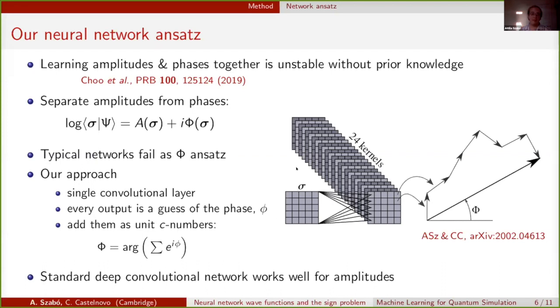What we do instead is that we build up a very simple neural network containing just one convolutional layer with kernels spanning the entire lattice. We treat every output from this kernel—in this case we use 24 kernels, so 24 times the system size—as a guess on what the phase capital Phi should be. Then we found a natural way of adding all these estimates, which is to just treat each of them as a unit complex number e to the i phi, sum them up, and then take the argument of this long complex number vector on the complex plane. That is going to be our answer for the phase.